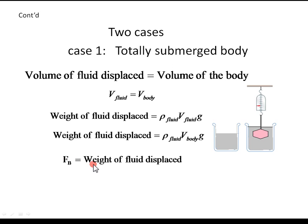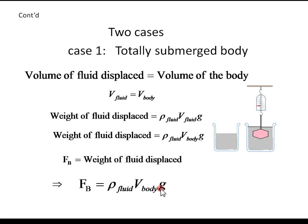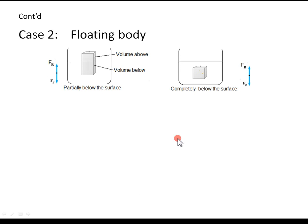Buoyant force equals weight of fluid displaced. Therefore, buoyant force can be written as density of the fluid times volume of the body times g. If the object is completely below the surface, you can replace the volume of the displaced fluid with the volume of the body.